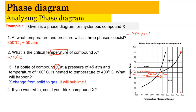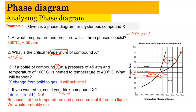For the fourth question: could you drink compound X? To drink it, it would need to be in liquid form. Logically, liquid compound X requires a pressure of more than 50 atm and a temperature of more than 350 degrees Celsius. If we were to drink something at 350 degrees Celsius, it is very illogical and very difficult to reach that high temperature. So the answer is obviously no — at that temperature and pressure, we would probably die from drinking the mysterious compound X.